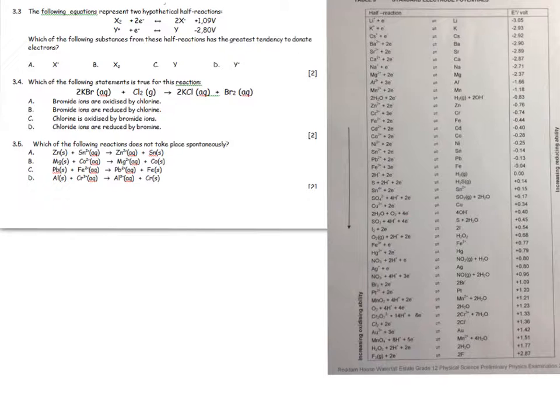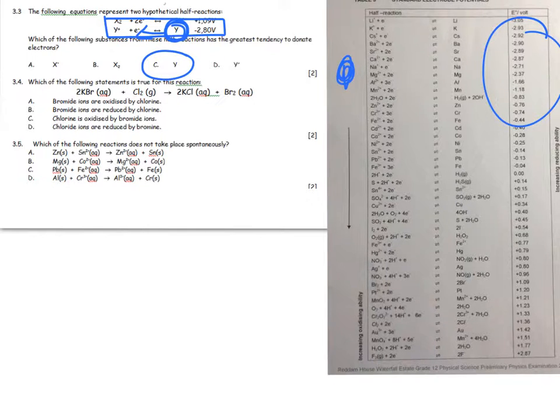The following equations represent two hypothetical half reactions. Which substance has the greatest tendency to donate electrons? The most negative one—the ones higher up are likely to be oxidized. First we're interested in the Y reaction, and then Y will give away electrons, so it's C.